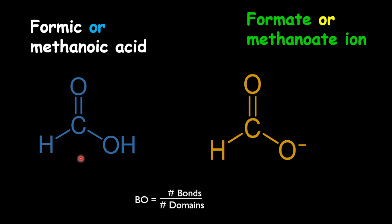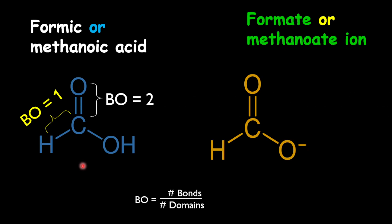For example, the bond between C and H has a bond order of one because it's a single bond. The bond between C and O is a double bond, so the bond order is two. The bond between C and O in the C-O-H group is a single bond, so the bond order is one.